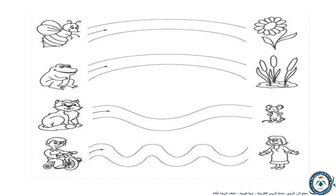we will find a flower, a lake with flowers, a mouse, and a mother. We will need to trace the lines following the arrows so that the bee will reach the flower, the frog will reach the flowers and the lake, the cat will reach the mouse, and the kid will reach his mother. Can you do it now?